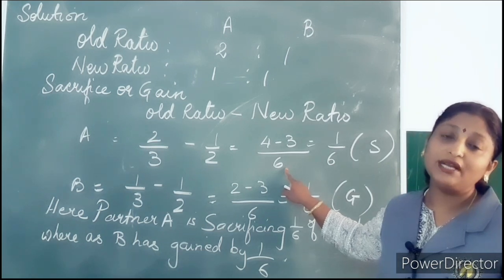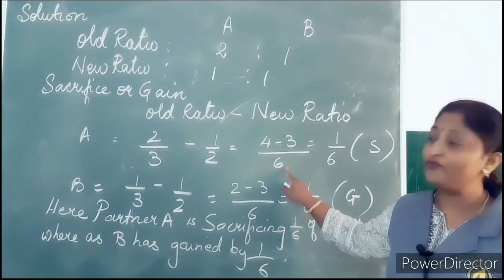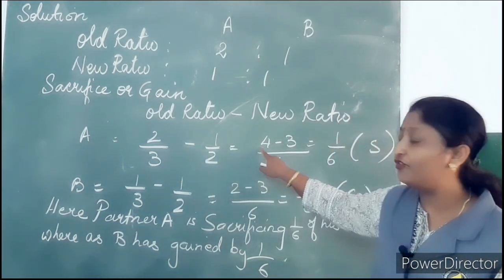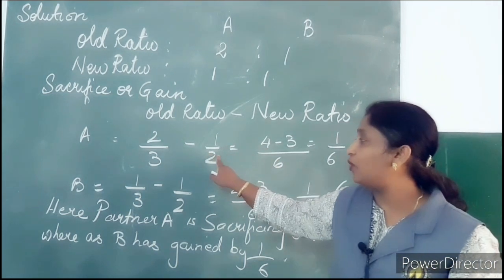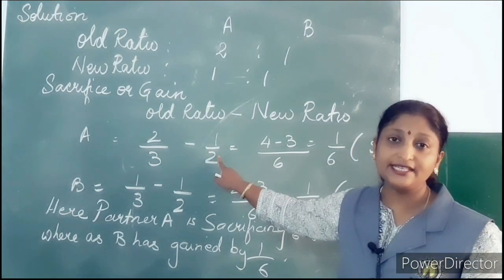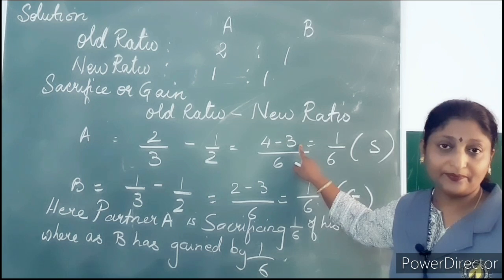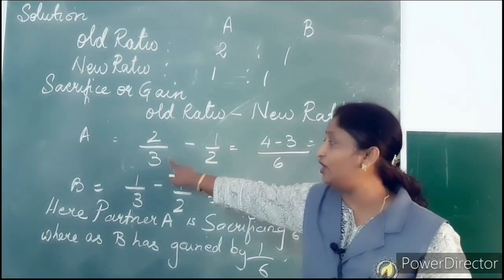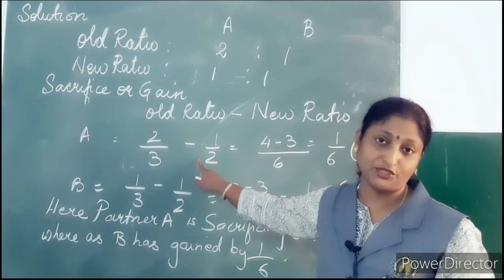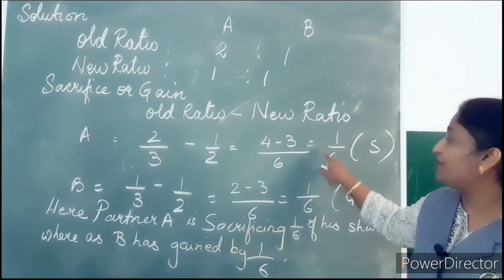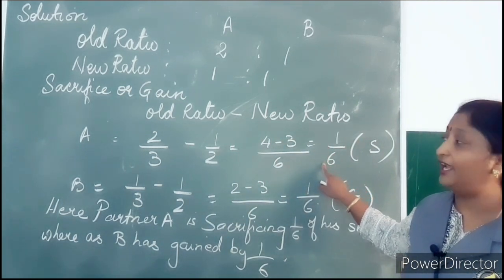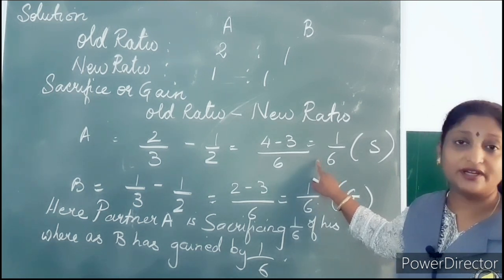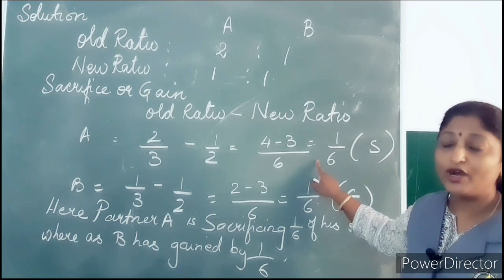We multiply the LCM with the fractions: 2 by 3 into 6 gives 4, and 1 by 2 into 6 gives 3. So 4 minus 3 — we take the difference as old ratio minus new ratio — which gives 1 by 6.